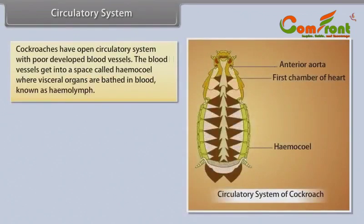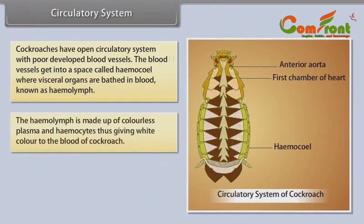Circulatory System: Cockroaches have an open circulatory system with poorly developed blood vessels. The blood vessels open into a space called the haemocoel, where vascular organs are bathed in blood known as haemolymph. The haemolymph is made up of colorless plasma and haemocytes, giving white color to the blood of the cockroach.